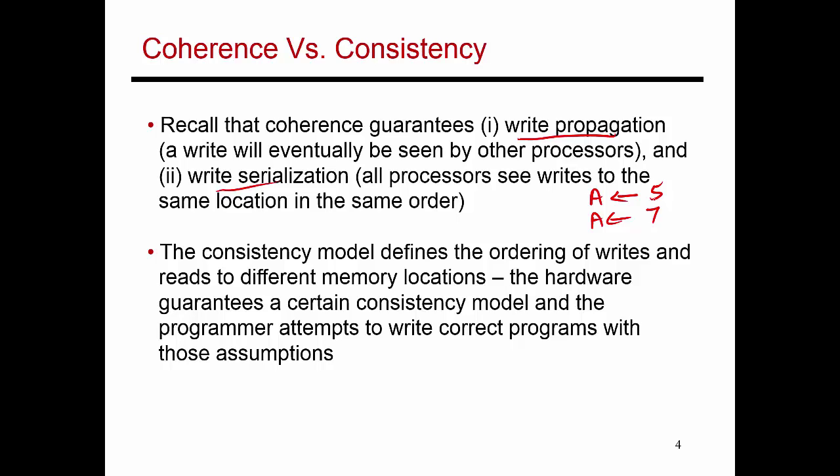The consistency model goes beyond that. If I write 5 into A and 7 into B, the cache coherence protocol makes no guarantees about how those two writes are going to be seen. That is where the consistency model comes in.